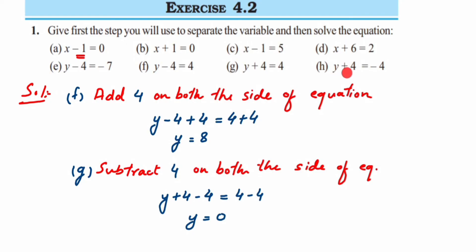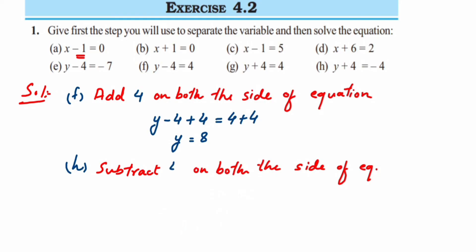Part (h): y plus 4 is equal to minus 4. We subtract 4 on both sides. y plus 4 minus 4 is equal to minus 4 minus 4. On the left, plus 4 minus 4 is 0. On the right, since both numbers have the same sign, we add: 4 plus 4 is 8, with a minus sign, so y is equal to minus 8. That's it — I hope you understood. Drop a comment if you have any doubt. Thank you for watching.